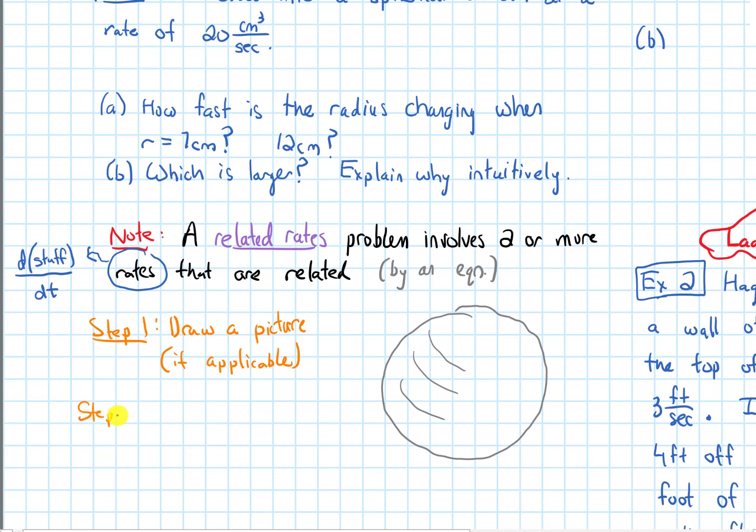We are on to step two. Step two is we assign variables to the quantities of interest - quantities that we actually care about that are changing.